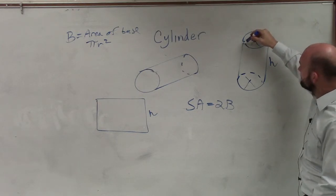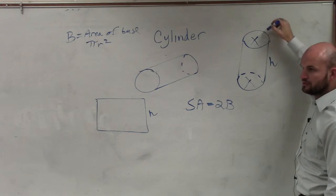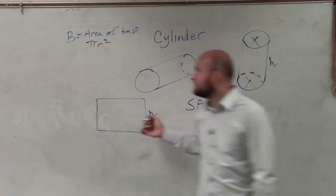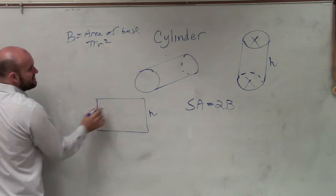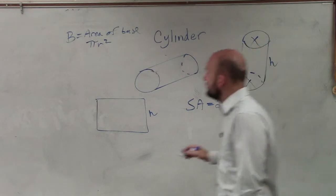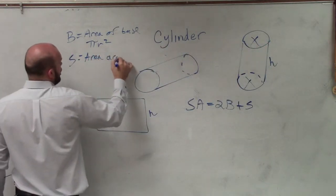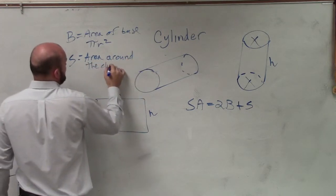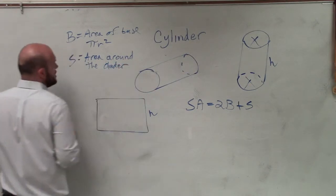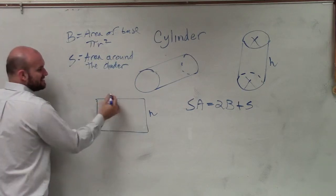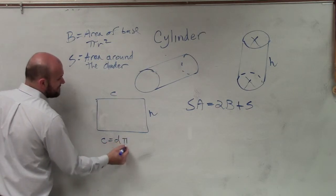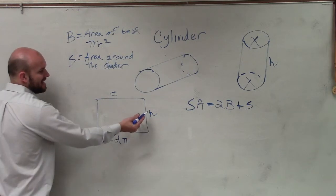What is, if you were to unwrap this, what is this wrap around the circle? What is this length? The diameter. It's not the diameter. The circumference. Circumference. So what you're going to do is plus the area of our side, where S equals the area around the cylinder. So the area around the cylinder, this is going to be the circumference of the circle. Remember, circumference equals diameter times pi. So it's diameter times pi times your height.